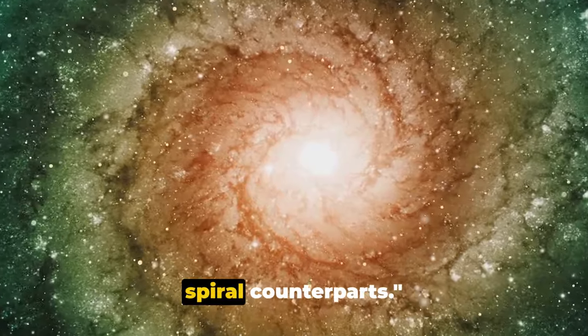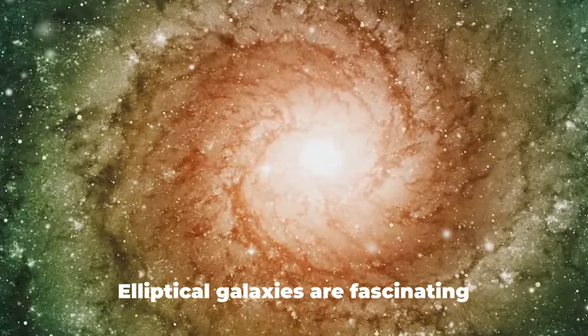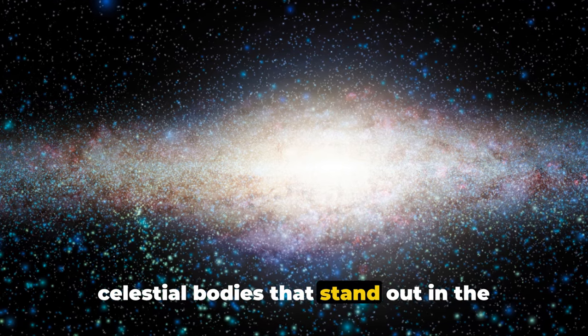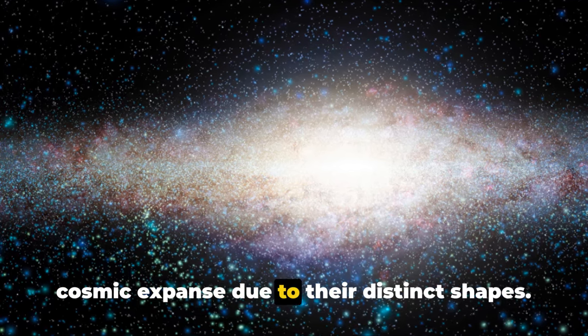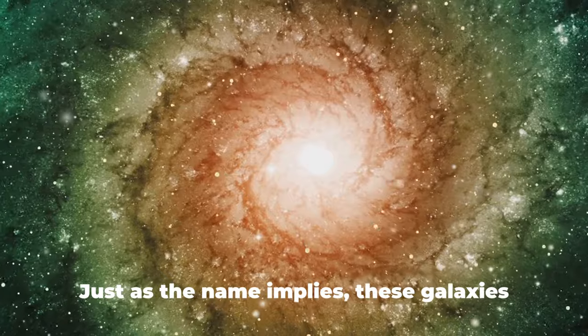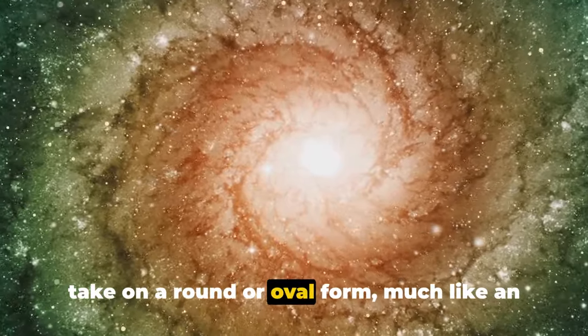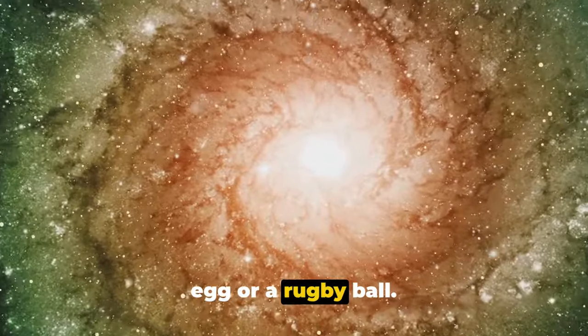Next we have the elliptical galaxies, which are quite different from their spiral counterparts. Elliptical galaxies are fascinating celestial bodies that stand out in the cosmic expanse due to their distinct shapes. Just as the name implies, these galaxies take on a round or oval form, much like an egg or a rugby ball.